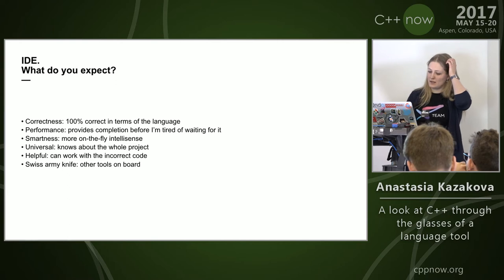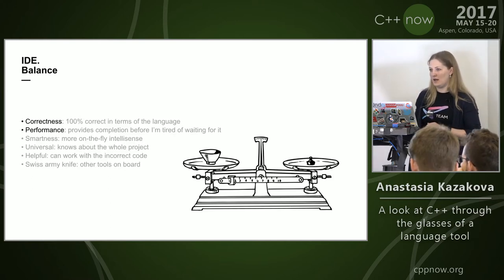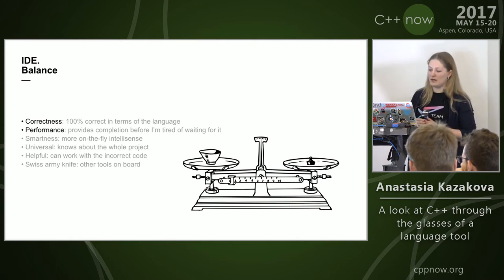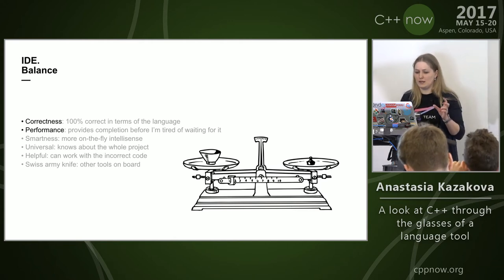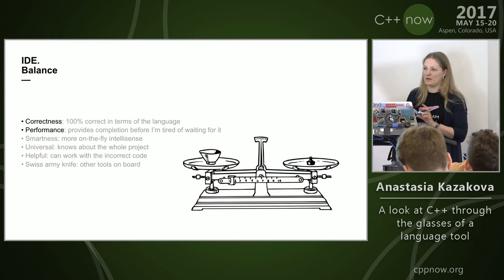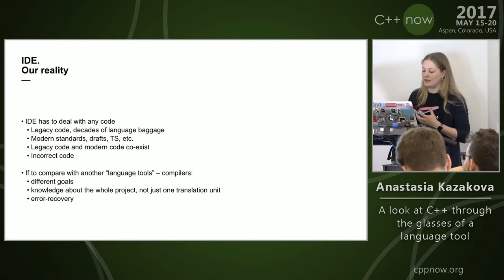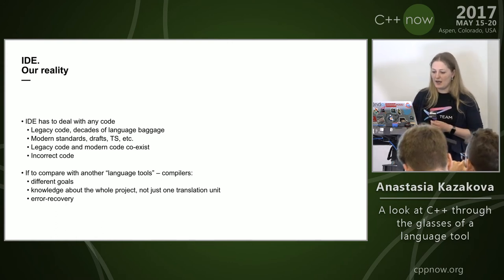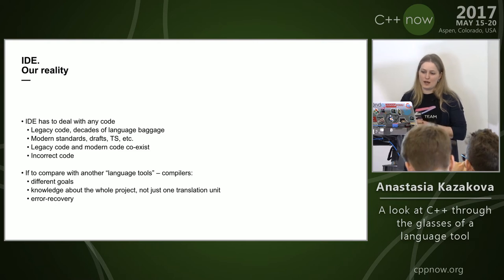Of course people expect as much of the language ecosystem as possible to be built into their IDE. So you see there's quite a long list, and sometimes it's not clear how to make everyone happy. Especially for C++, when you take correctness and performance together, there is always a question of balance. Making a 100% correct IDE is possible, but it will most likely kill the whole performance for any real, usable project.